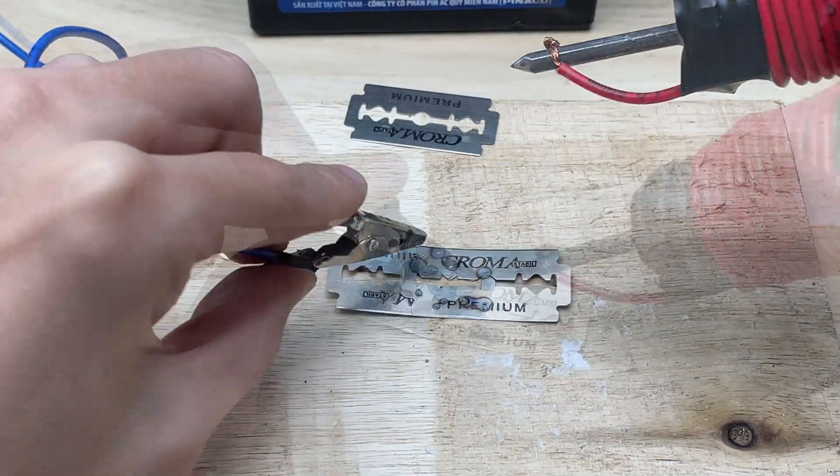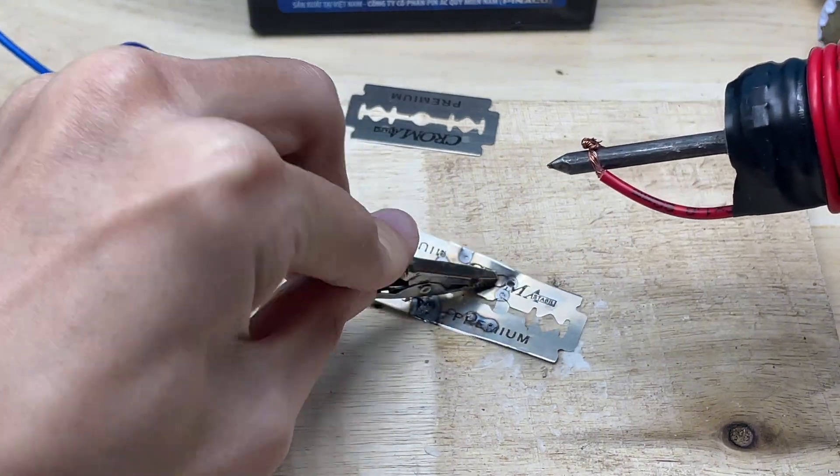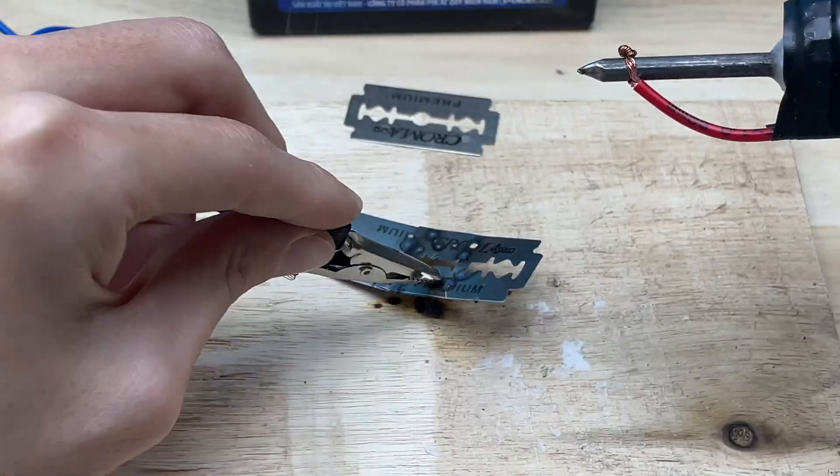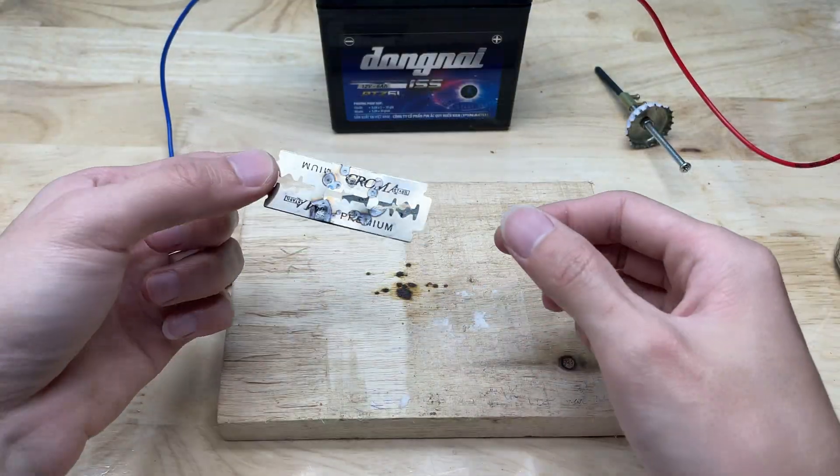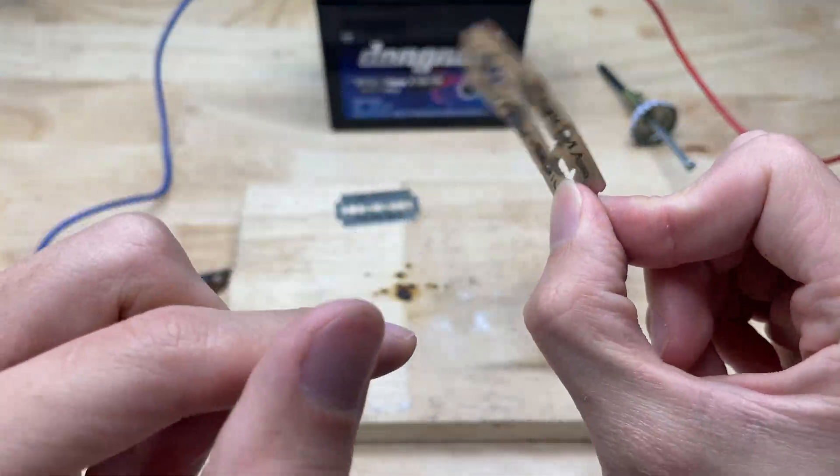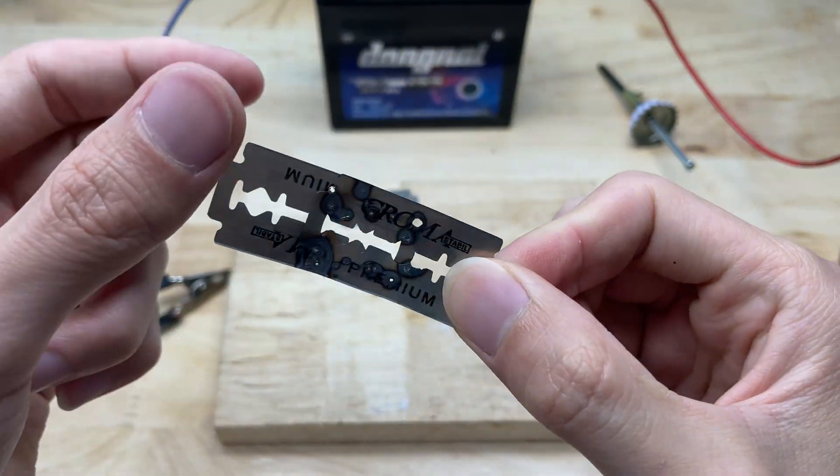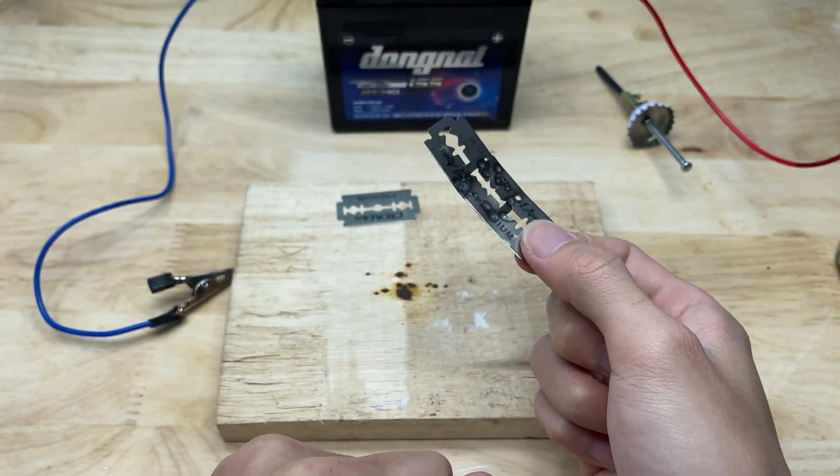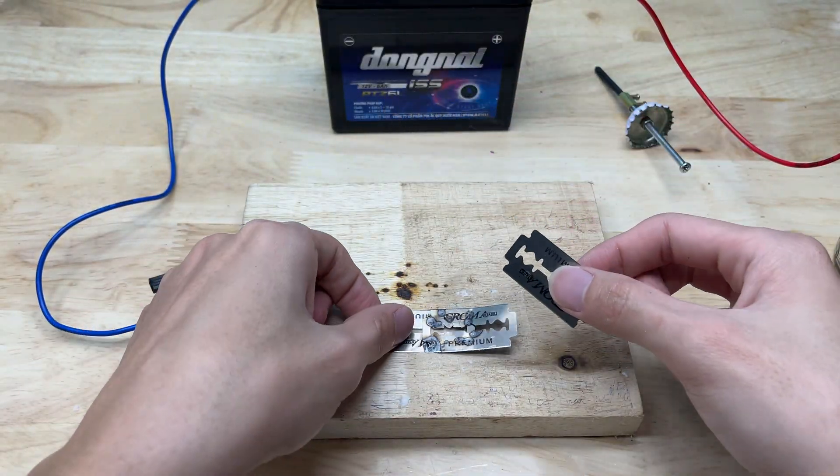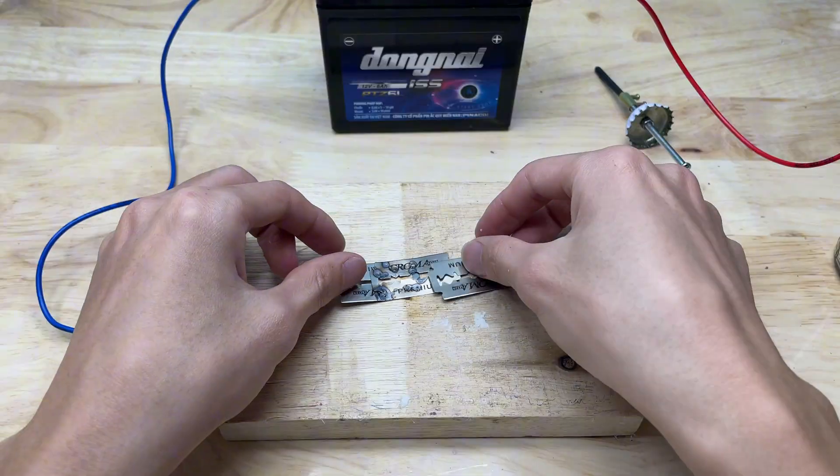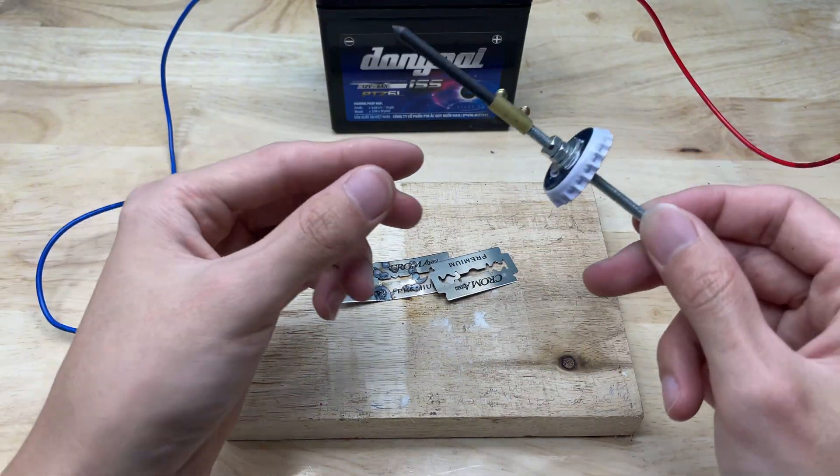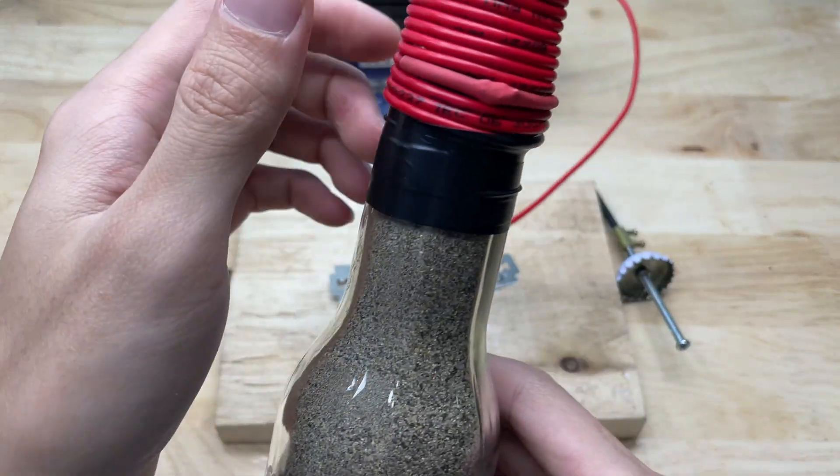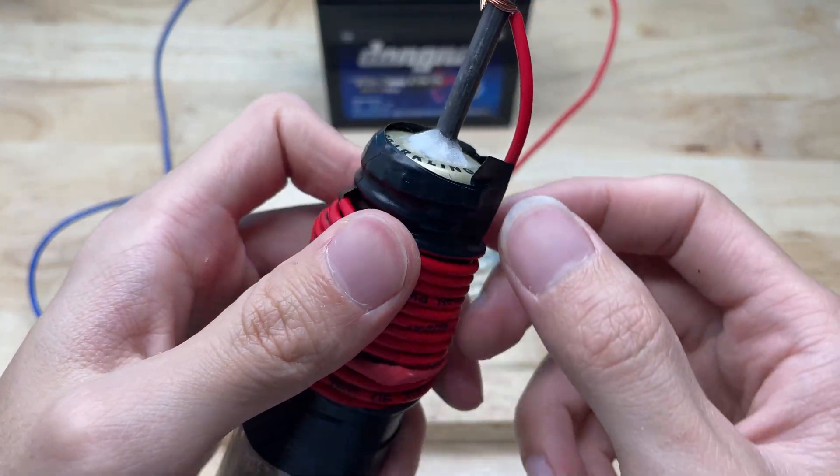When soldering onto a razor blade, the effectiveness of the welding tip becomes very clear. Thanks to the tip heating quickly and maintaining focused heat, the solder adheres firmly to the thin metal surface of the blade without slipping or clumping. The joint forms quickly and creates a strong bond, securing small components or wires in contact with the blade. At the same time, because the heat is well controlled, the surface of the blade does not overheat, preserving its shape and ensuring safe handling during the process.